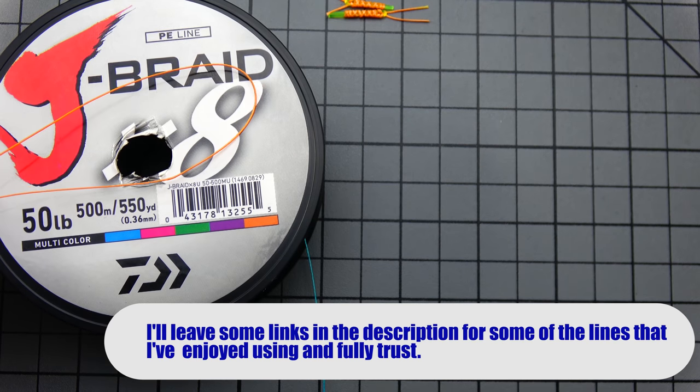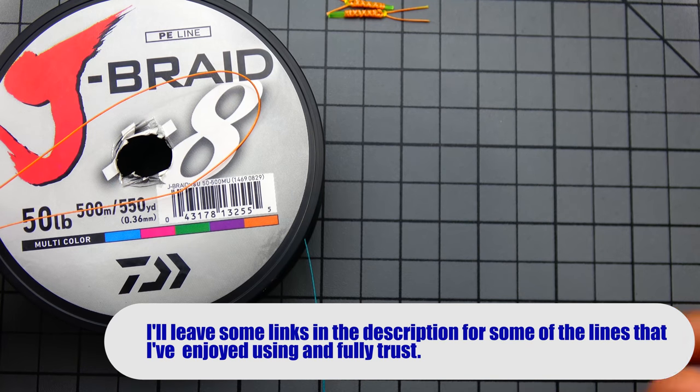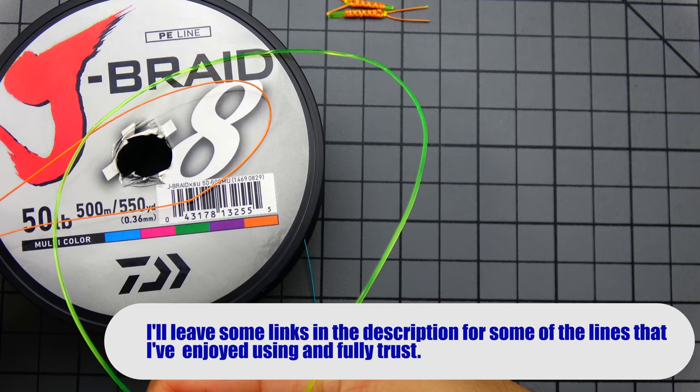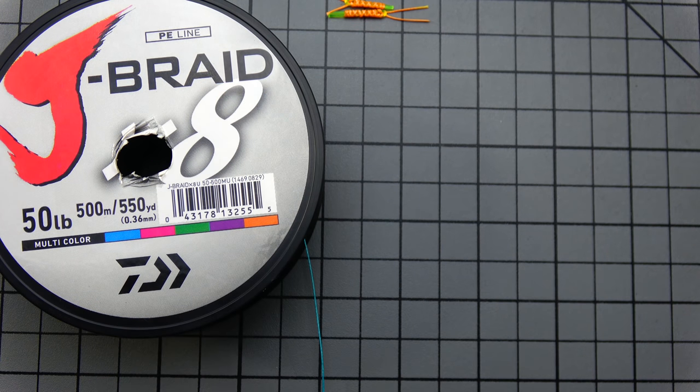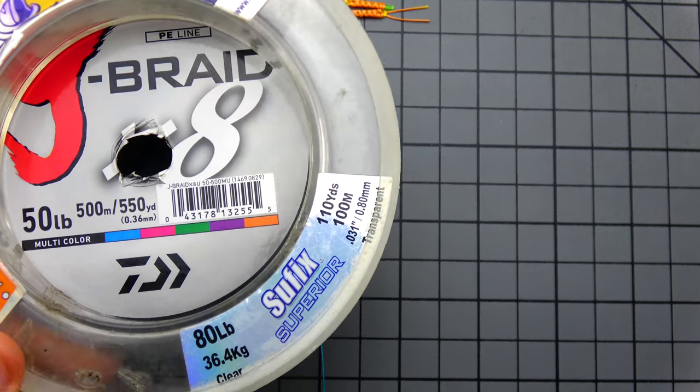All right, now starting off, I'm going to be using Daiwa's 50-pound test Jaybraid X8 to simulate my main line, and I'm going to be using Berkley's 80-pound test Big Game to simulate the leader. Now many of us use what are called wrist spools, spools that look like this. I'm a big fan of the suffix leader material. It's cheap, strong, abrasion resistant, does a great job.